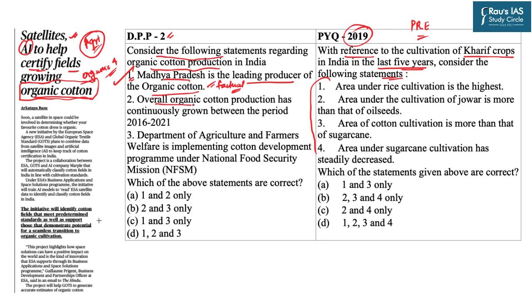Statement two says that overall organic cotton production has continuously grown between 2016 and 2021 — again a factual statement reflecting an important trend, and a correct one. Statement three says the Department of Agriculture and Farmers Welfare is implementing the cotton development program under the National Food Security Mission — again factually correct. So all three statements are correct and option D is the correct answer. This year's prelims has many questions based on facts and data, so you should be aware of recent data on important themes.